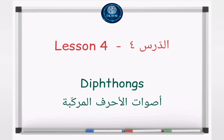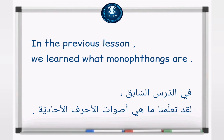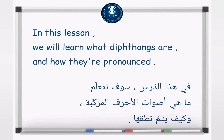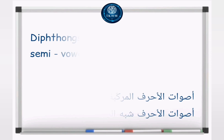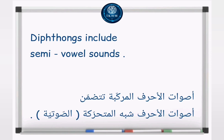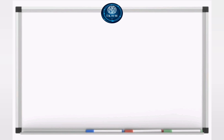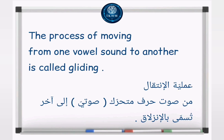Lesson 4: Diphthongs. In the previous lesson, we learned what monophthongs are. In this lesson, we will learn what diphthongs are and how they're pronounced. Diphthongs are complex vowel sounds composed of two different monophthongs. Diphthongs include semi-vowel sounds. The process of moving from one vowel sound to another is called gliding.